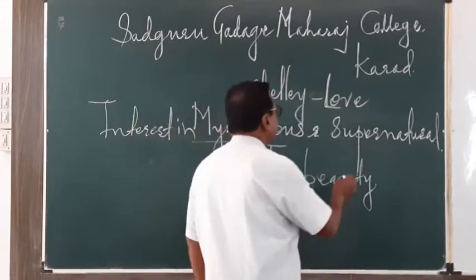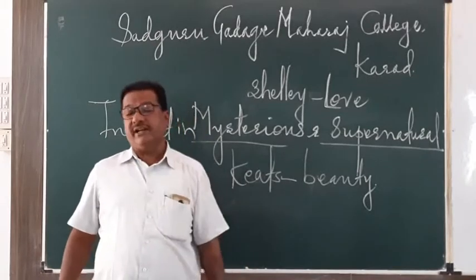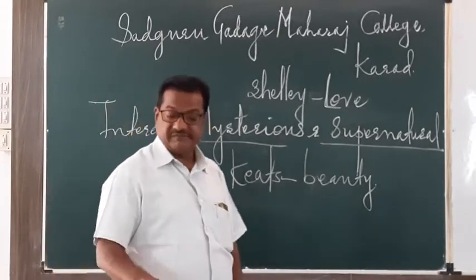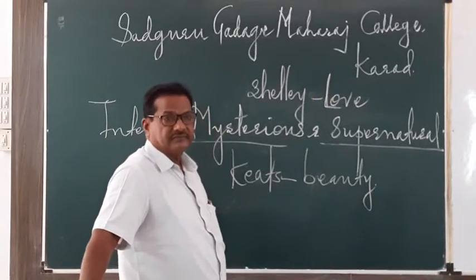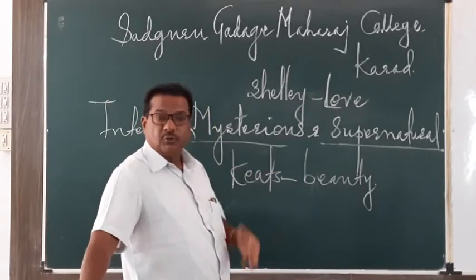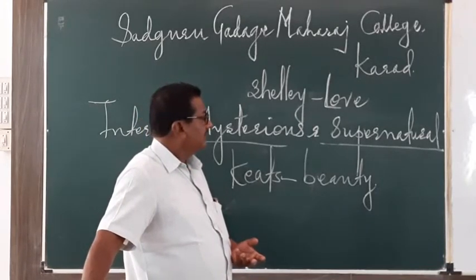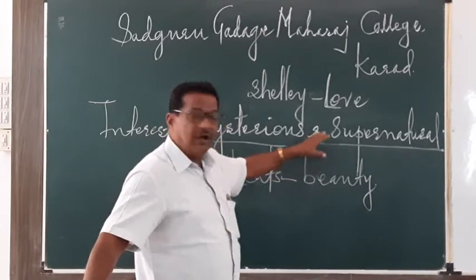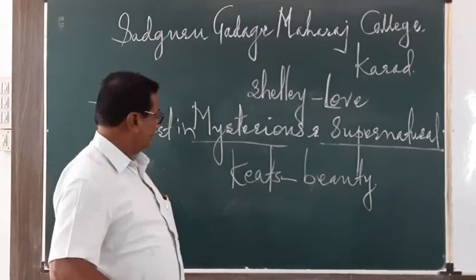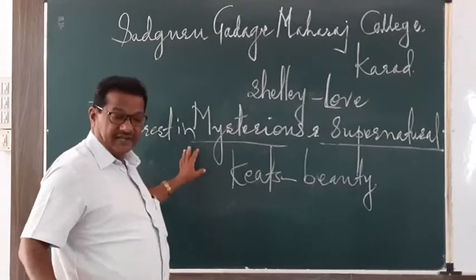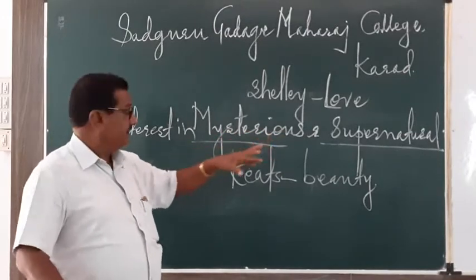As far as the supernatural is concerned, when we look at S.T. Coleridge — one of the elder romantic poets — we find his poetry is full of supernatural elements. 'The Ancient Mariner,' 'Kubla Khan,' 'Don Juan,' and 'Christabel' are all full of supernatural elements. This clearly shows that romantic poets were really interested in the mysterious and supernatural.